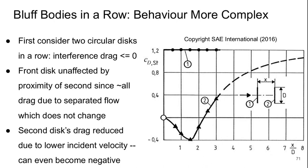When I've got two bluff bodies in a row, the behavior is a little bit more complicated. First, let's consider two circular discs in a row. Here, the interference drag is negative.